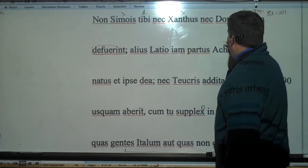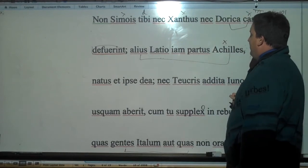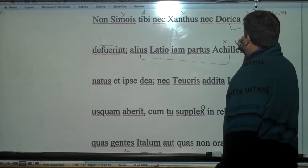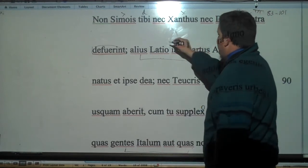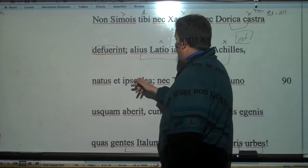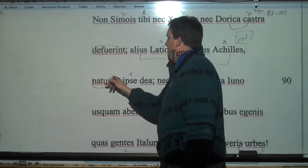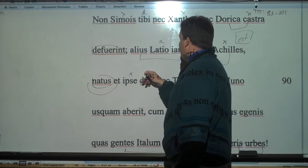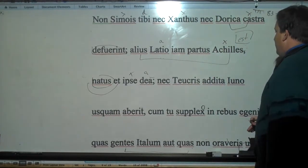And then she says now another Achilles, another Achilles - iam has been left out of iam altus - has been prepared in Latium, or has been born in Latium. And he himself is born from a goddess, ablative. Oh no, there's another Achilles.